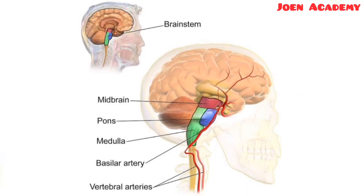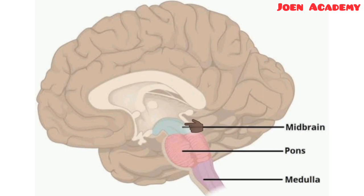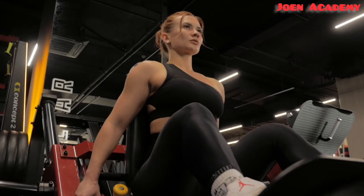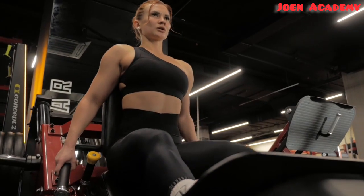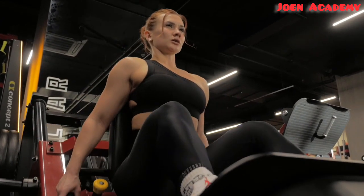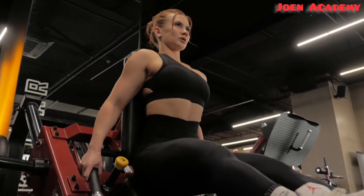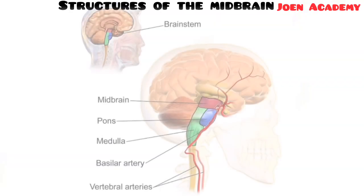Among the different parts of the brain stem, the shortest part is the midbrain. Despite being the shortest part of the brain stem, the midbrain contains a lot of essential structures which makes it very important for the proper functioning of the body. Let's quickly look at some of those important structures contained in the midbrain.